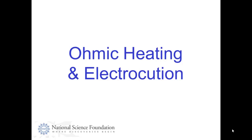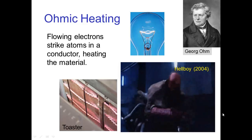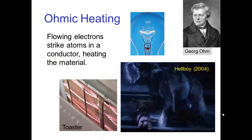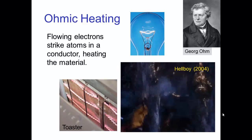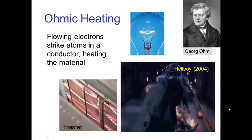Ohmic heating and electrocution. One property of a current when it's flowing through material is that the electrons tend to randomly strike atoms in the material, and that resulting energy is transferred into the material and heats it up. This is known as ohmic heating by an electric current. We see that in toasters and in this scene from Hellboy, where Hellboy fights a monster in the subway and uses high voltage electric current to create ohmic heating in the monster, causing it to burst into flames. Of course, Hellboy is not affected because he's fireproof.